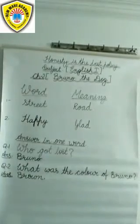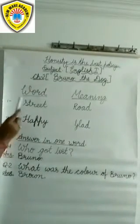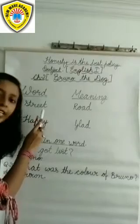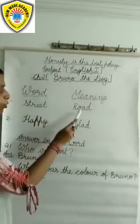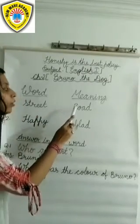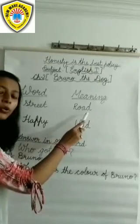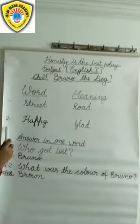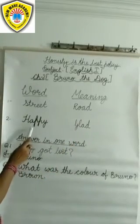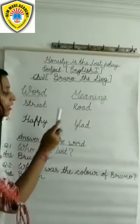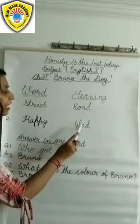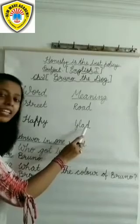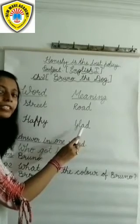Now let us revise word meanings. First: street. Street means road. R-O-A-D, road. Road means sadak. Second: happy. Happy means glad. G-L-A-D, glad. Glad means khush.